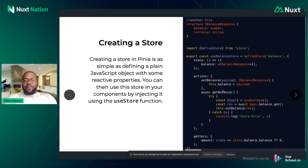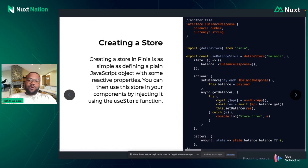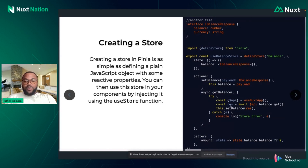We have two methods: one to set the balance, and another to fetch data from an external API. After fetching the data from the API, we set the balance with the result. Notice that we have typed our state with the BalanceResponse type.